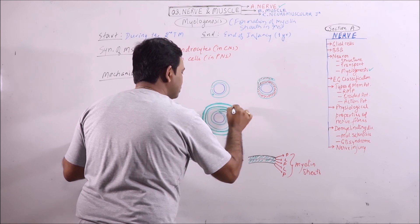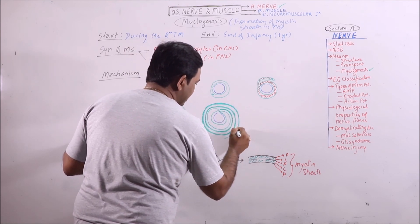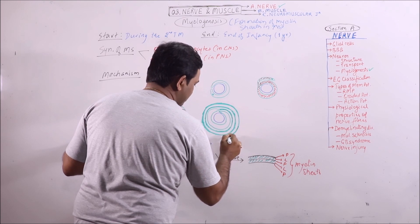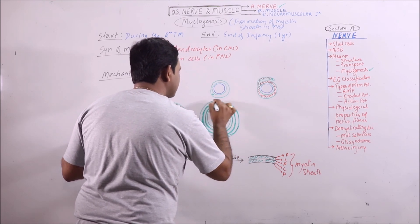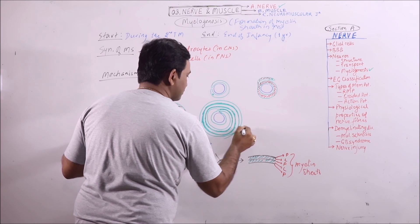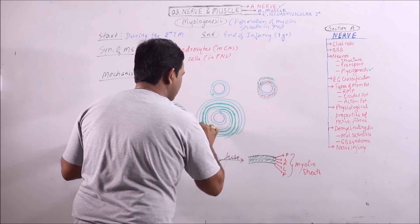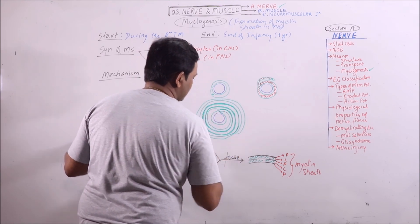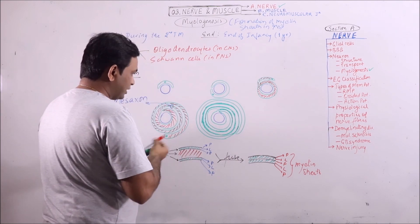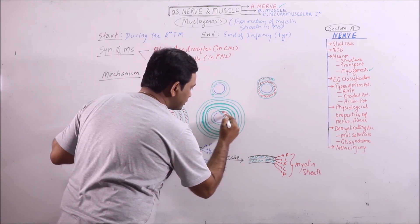And when it surrounds completely, then the most peripheral layer it again separates. Now cytoplasm, this is the cytoplasm.